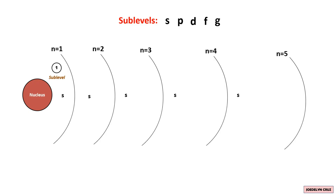In the second energy level, there are two sublevels: S and P. The P sublevel can also be found in the third, fourth, and fifth energy levels. In the third energy level, there are three sublevels: S, P, and D. The D sublevel also exists in the fourth and fifth energy levels.